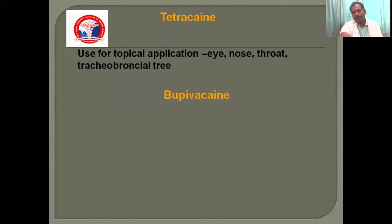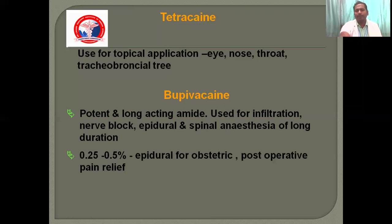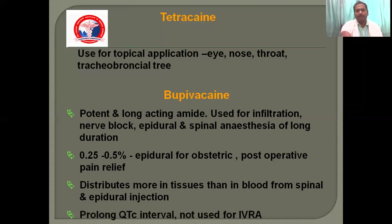Bupivacaine is one of the most commonly used drugs in day-to-day clinical anaesthesia practice. It is a potent, long-acting amide agent useful for infiltration and nerve blocks such as supraclavicular and intercostal nerve blocks, as well as other regional nerve blocks. Epidural and spinal anaesthesia also produce a longer duration, making it most commonly used for all types of lower limb surgeries. A 0.25 to 0.5% concentration is used epidurally for obstetric and postoperative pain relief. It distributes more into tissues than blood. It prolongs the QT-C interval and should not be used for IV regional anaesthesia. Bupivacaine is the most commonly implicated drug in cardiac toxicity.